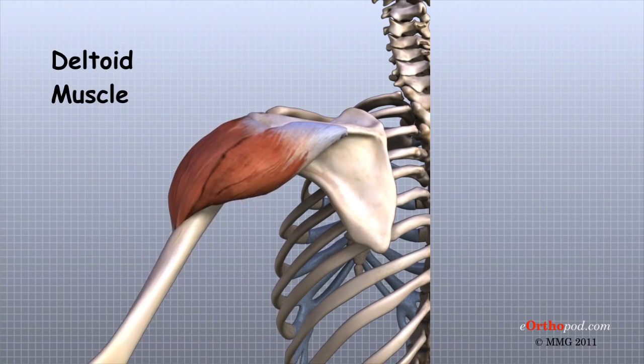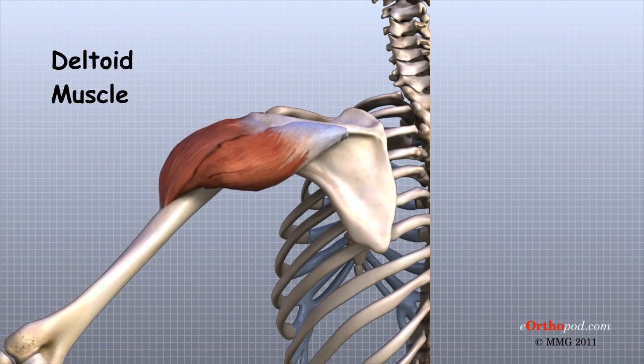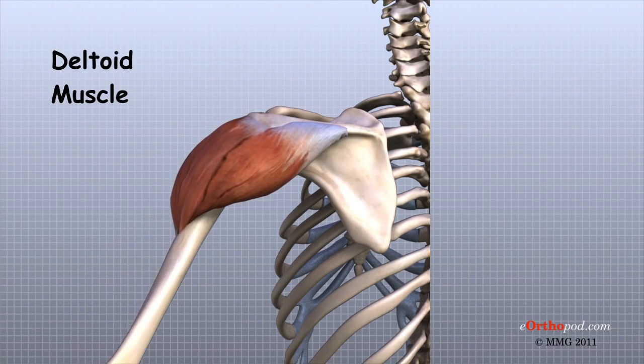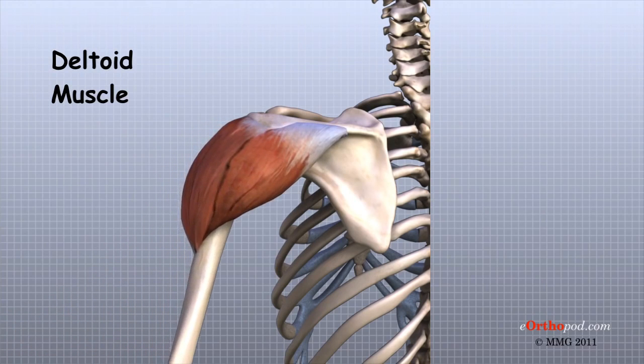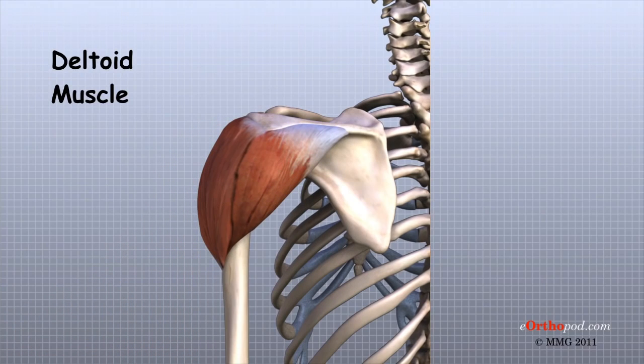The large deltoid muscle forms the outer layer of shoulder muscle. The deltoid is the largest, strongest muscle of the shoulder, and it provides the power to lift the arm once the arm is away from the side.